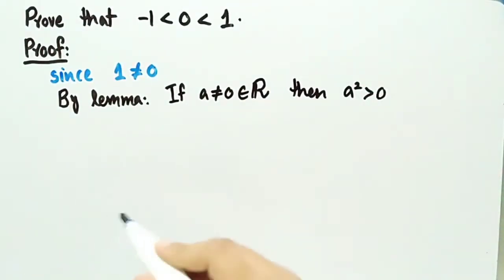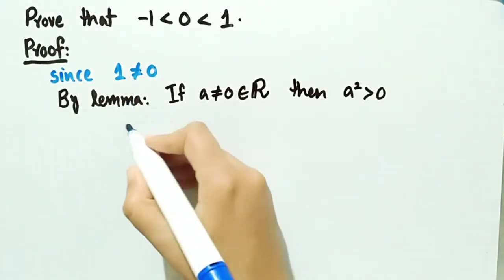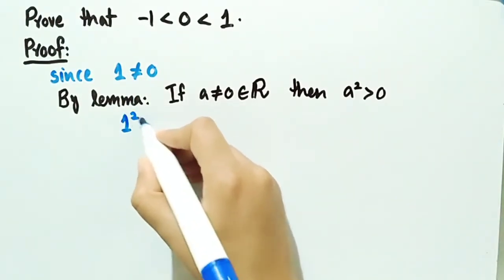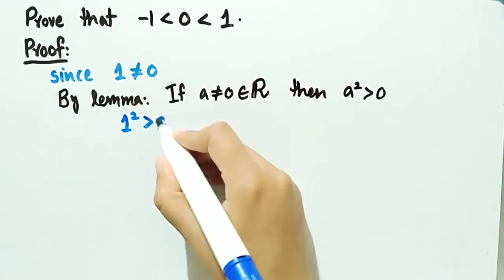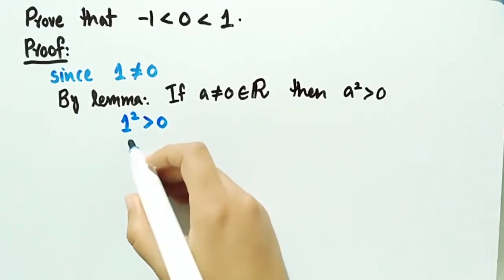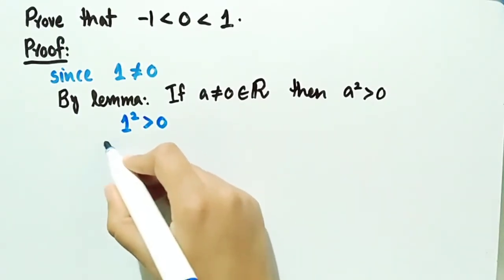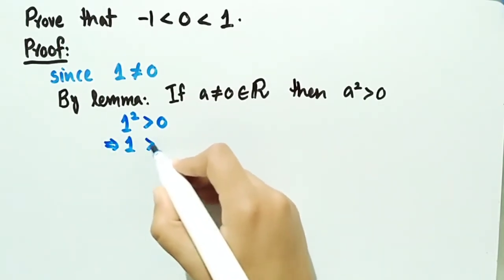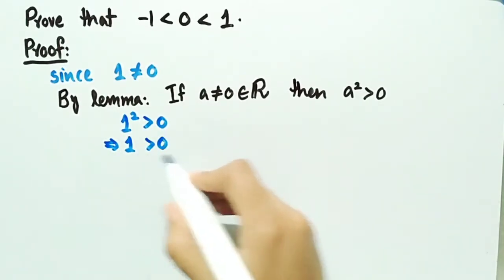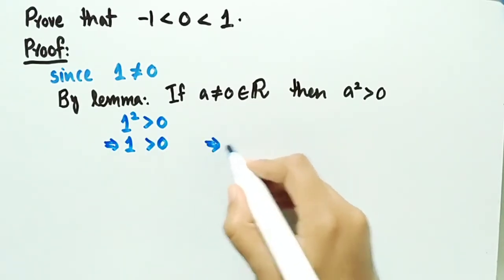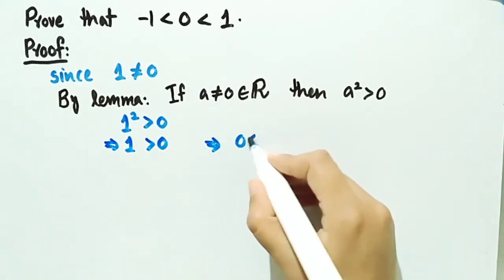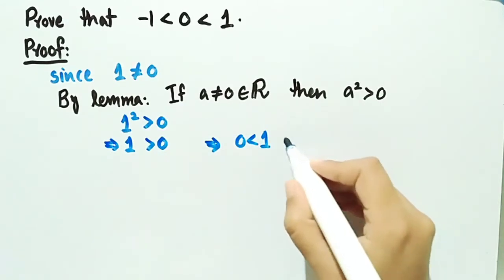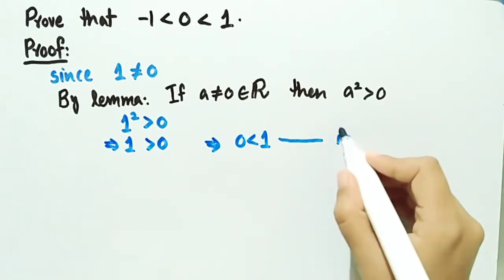We can write 1² > 0. Since 1² = 1, this implies 1 > 0, or equivalently 0 < 1. Let this be equation 1.